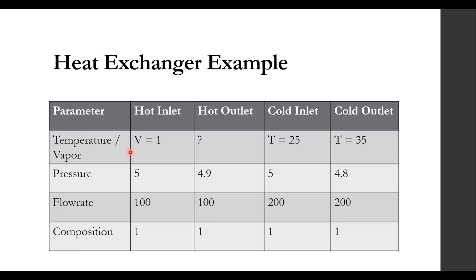This is a heat exchanger example where we are given temperature, vapor fraction, pressure, composition, and flow rate. On the hot side: vapor fraction is 1, pressure is 5 bar, flow rate is 100 kmol/hr, and water mole fraction is 1. We need to find the hot outlet temperature; the pressure drop on the hot side is 0.1 bar. On the cold inlet: 25°C, 5 bar, 200 kmol/hr, water mole fraction is 1, and the cold outlet is 35°C at 4.8 bar, meaning a pressure drop of 0.2 bar. Let's quickly go to Aspen Plus and simulate this process — it will not take more than one to two minutes.